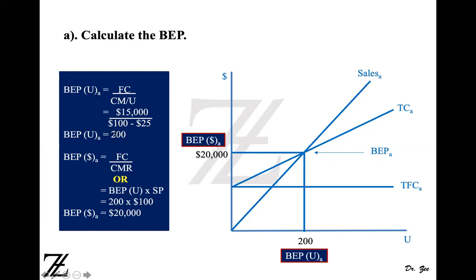You need to sell at least 200 units to reach the break-even point, which you can see in the graph on the right-hand side where total cost intersects sales at 200 units — that's break-even point A.